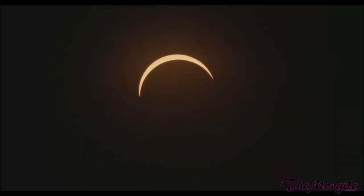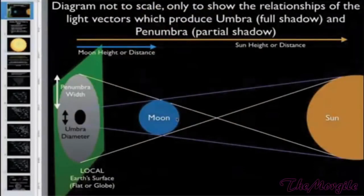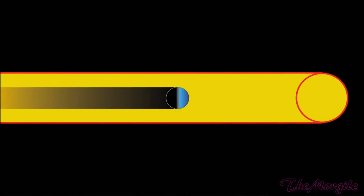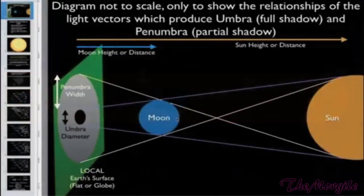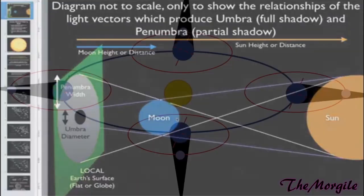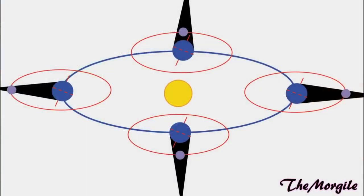To ignore unquestionable basic physical evidence such as this, which opposes one's belief system, is intellectually dishonest and is the opposite of science. Furthermore, to invent wild apologetic theories like the divergence of the sun's rays in space to allow for the moon's shadow to be ridiculously small is a signature tactic of the globe Earth proponents.